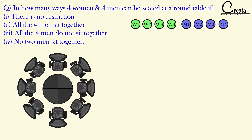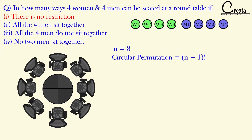In the first condition, there is no restriction — meaning we have total freedom in where the 4 women and 4 men can sit around this circular table. We have a total of 8 people, that is 4 women plus 4 men, and 8 slots around the circular table. So circular permutation is applicable here, with n equal to 8.